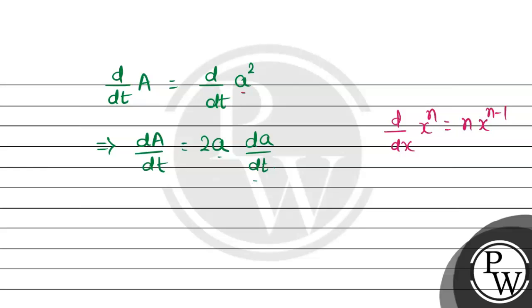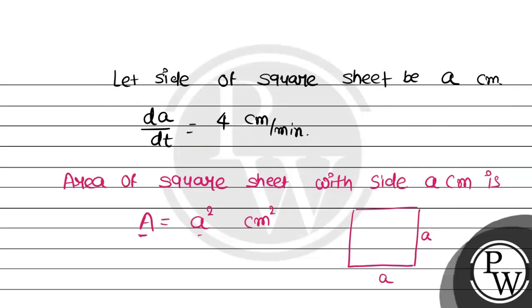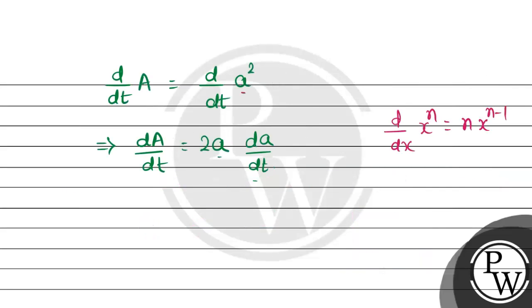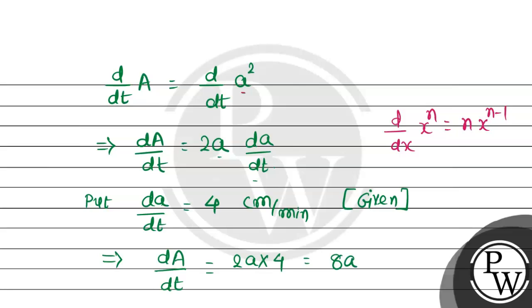Now we have the value of da/dt. This is 4 cm per minute, that is given. So dA/dt = 2a × 4 = 8a cm² per minute.